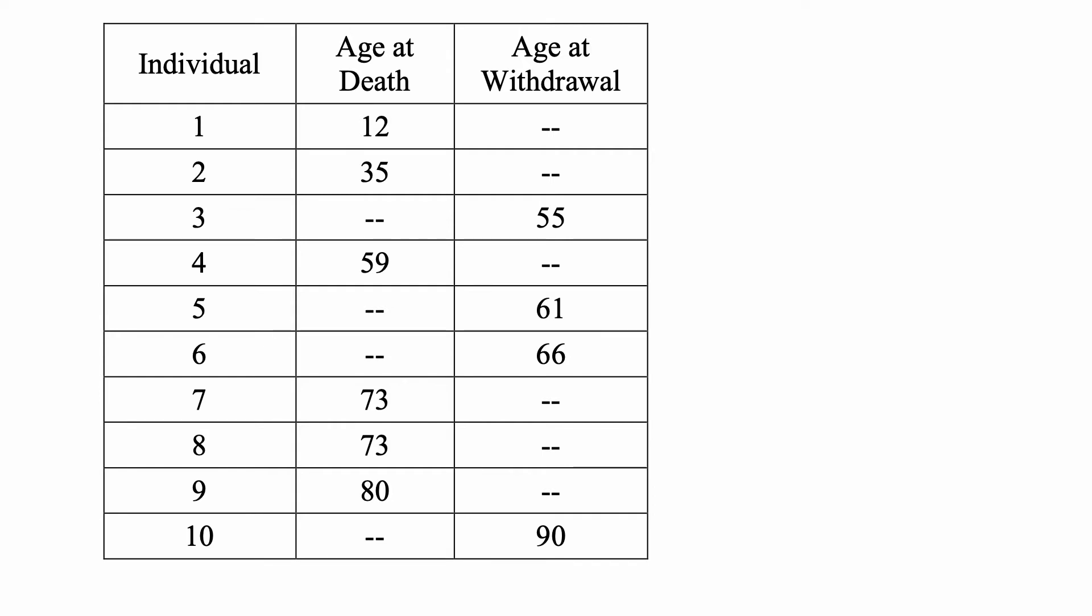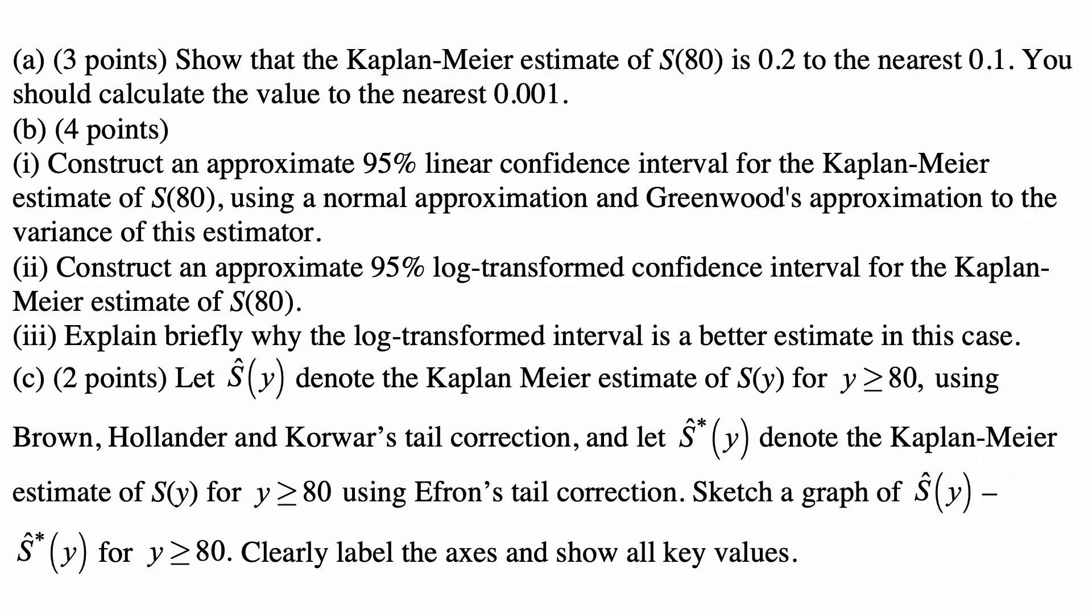So you have the ten individuals, and for each you have age of death or age of withdrawal. Part A: Show that the Kaplan-Meier estimate of S(80) is 0.2 to the nearest 0.1. You should calculate the value to the nearest 0.001.